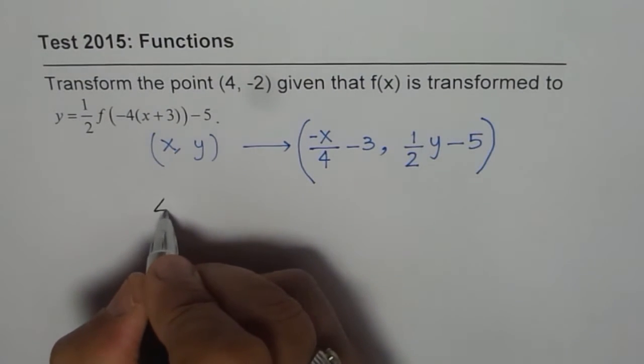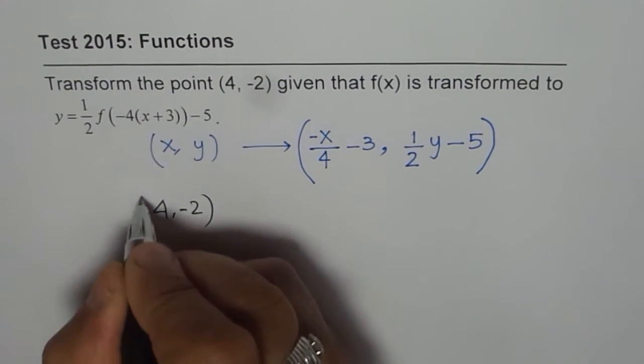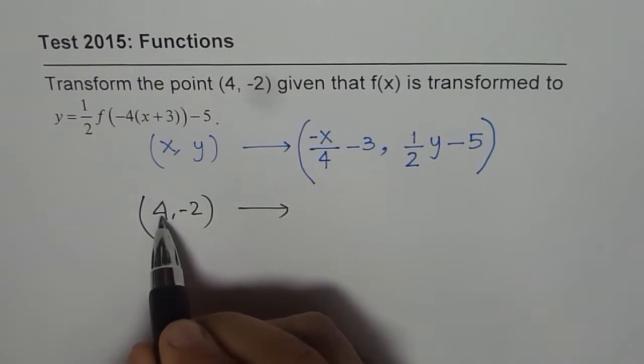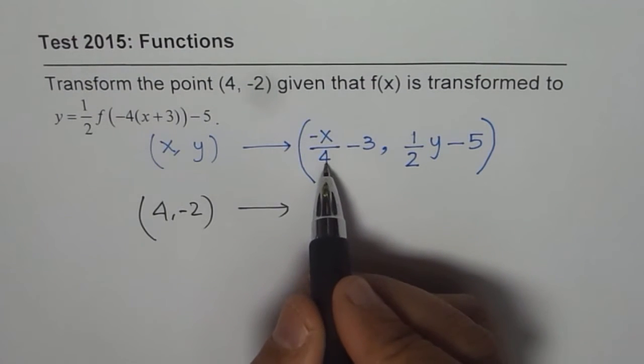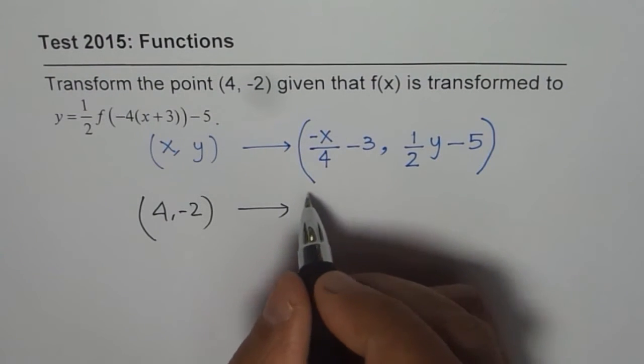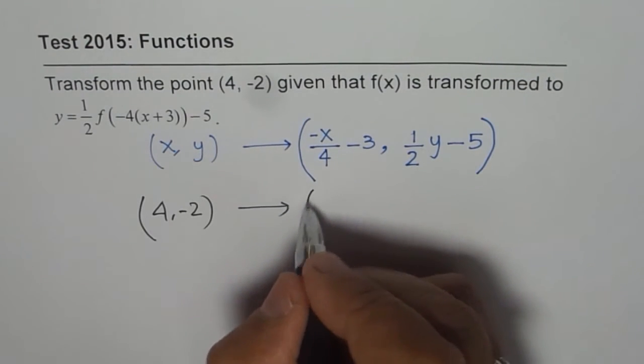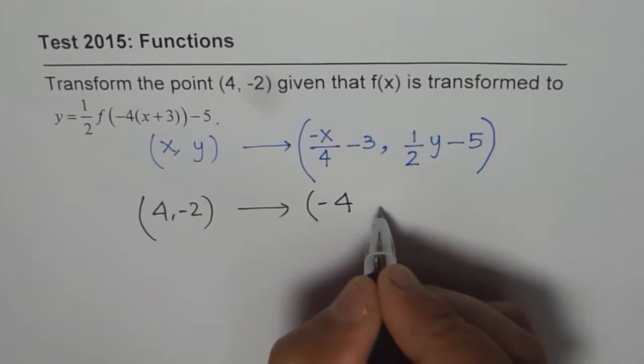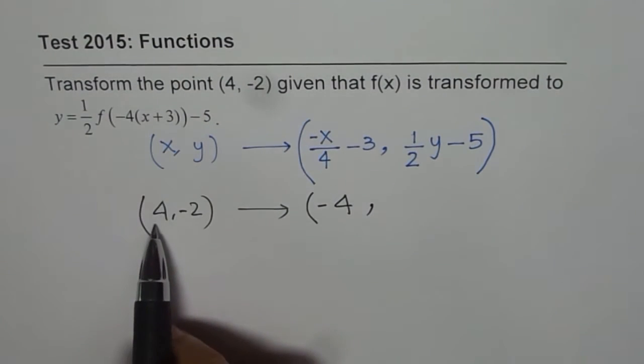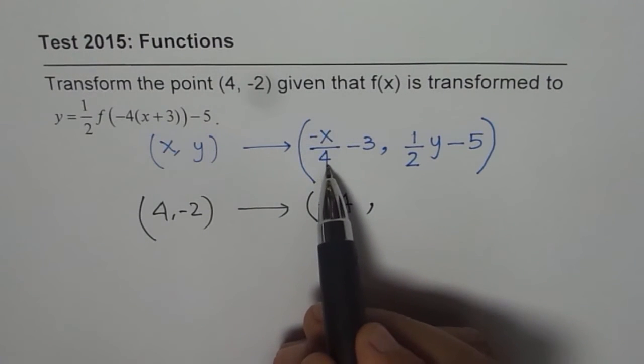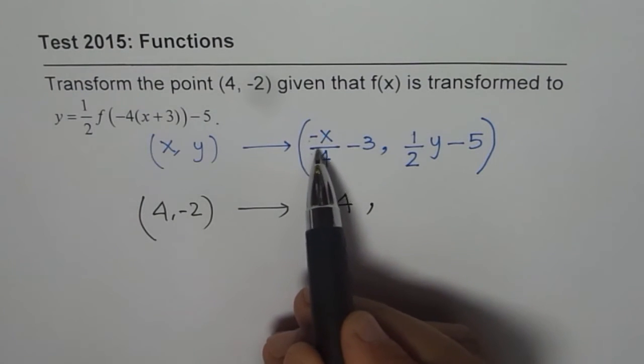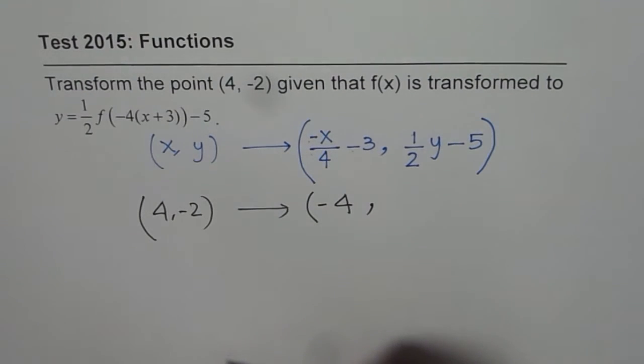Original point for us is (4, -2). Let's do our calculation. On the image, one fourth of 4 is 1 with a negative sign, and then we do minus 3. So minus 1 minus 3 gives us minus 4. If you put 4 here, 4 divided by 4 is minus 1, minus 1 minus 3 is minus 4.